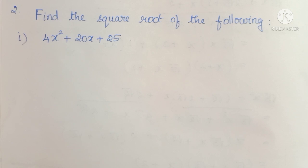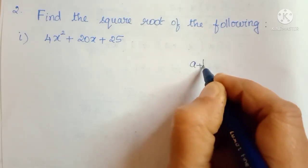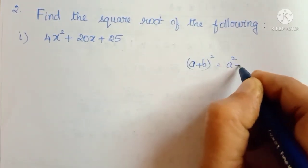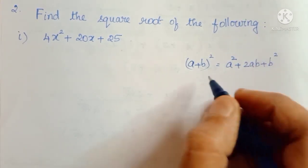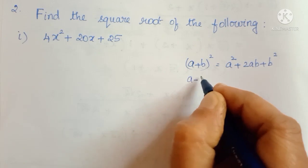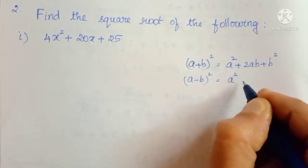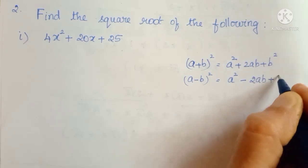So here we have mostly a perfect square formula, so the formula method is suitable for all of us. The main formula we use in this exercise is: a plus b, the whole squared, that is a squared plus 2ab plus b squared. Another formula: a minus b, the whole squared, that is equal to a squared minus 2ab plus b squared.